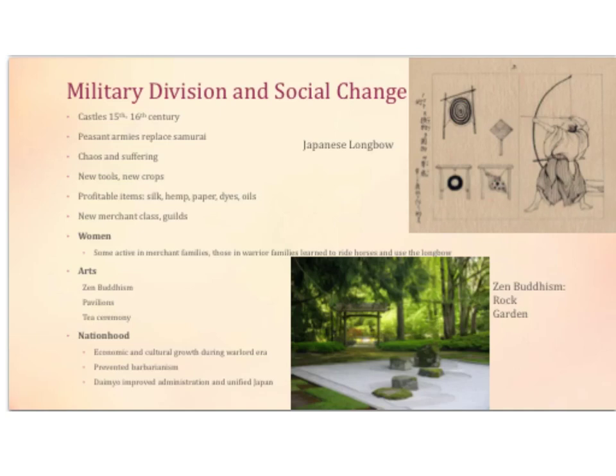Under arts, there is the rise of Zen Buddhism. The image of a rock garden is symbolic of Zen Buddhism — focusing on beauty and the aesthetics of the world. There's also the rise of pavilions, famously known in Japan, and the tea ceremony. There's also a rise in the creation of nationhood, Japan becoming unified. There is economic and cultural growth during the warlord era, which prevented barbarism, and the Daimyo — the lords — improved administration and unified Japan.